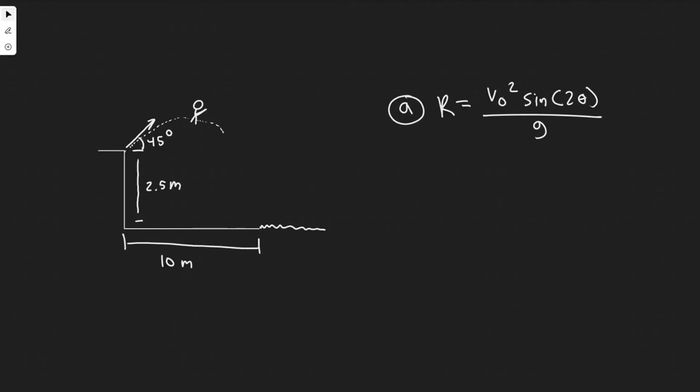In this problem we're told a long jumper leaves the ground at 45 degrees above the horizontal and lands 8 meters away. What is her takeoff speed V₀?